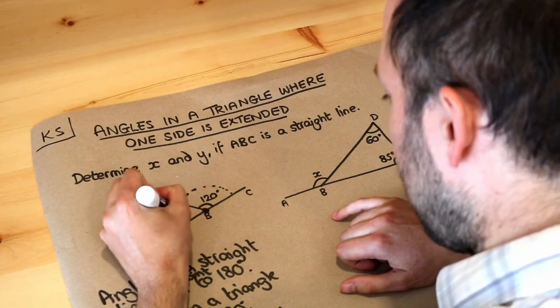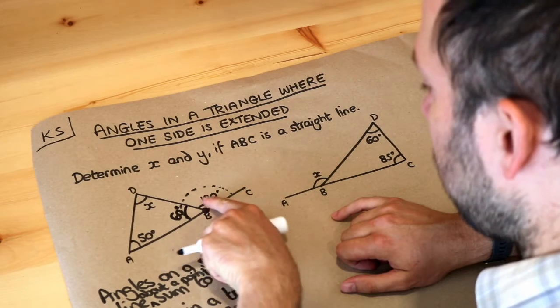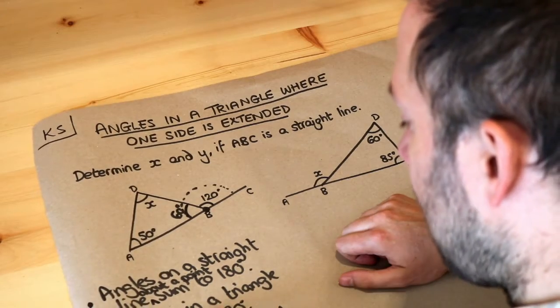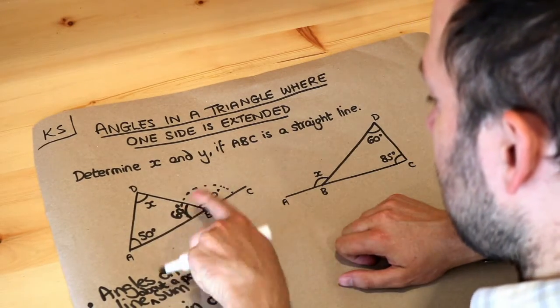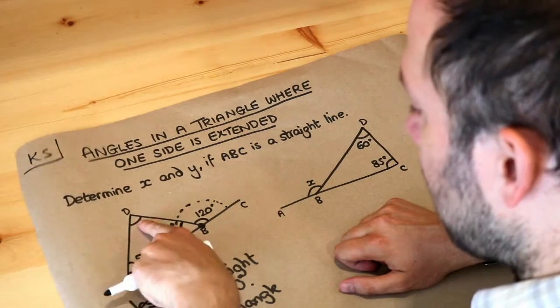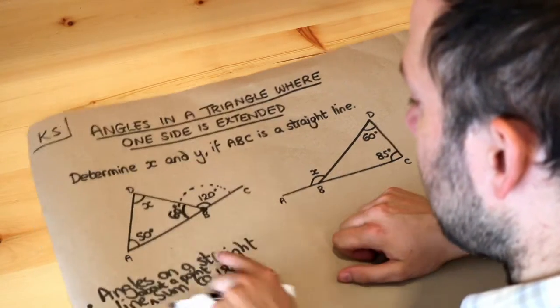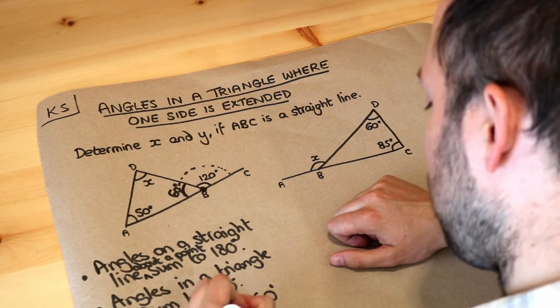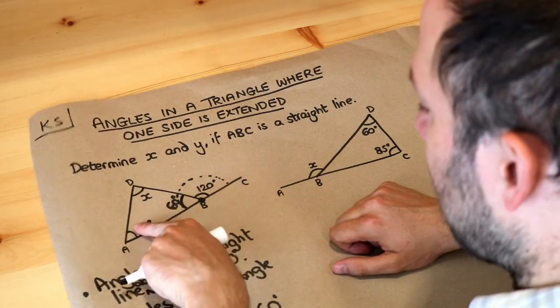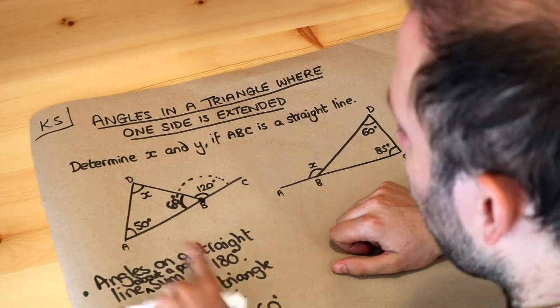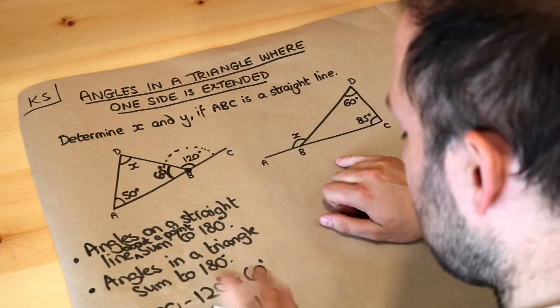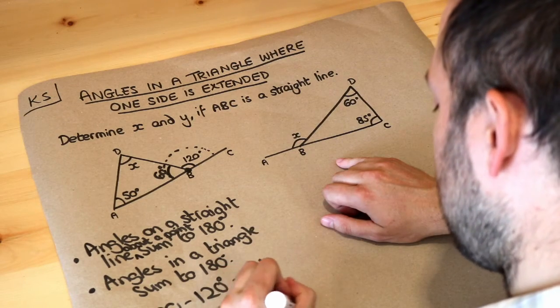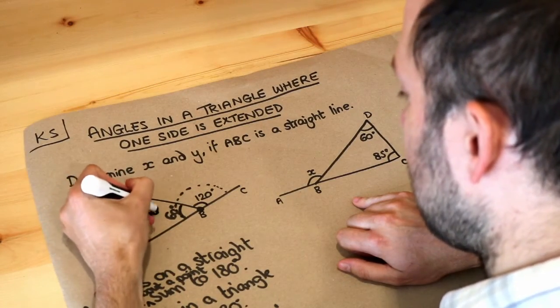So we now know that this angle here is 60 degrees so those two angles add up to 180. Now we can use this angle law that the angles in a triangle sum to 180. If we add these two, 50 plus 60 is 110, so these two angles combined come to 110. All three of them add up to 180 so we just subtract that total from 180 and 180 minus 110 is 70 degrees. So x is equal to 70 degrees.